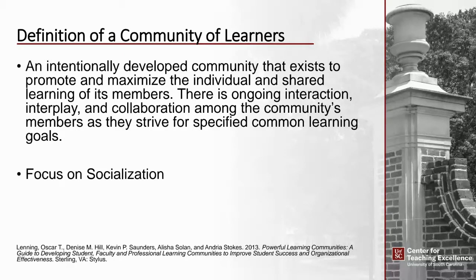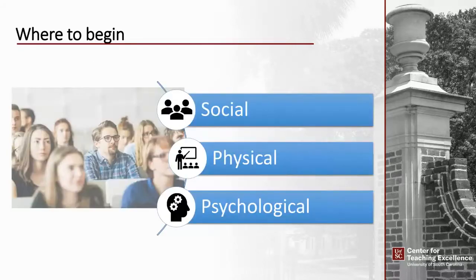Now that you have formulated your own ideas and heard the definition of a community of learners, where do you begin? Building that community of learners in your classroom is intentional and requires you to plan your strategy in advance. Whether your class is face-to-face, online, blended, or hybrid, students want to connect with you and their fellow classmates. We'll focus on three strategic areas: social, physical, and psychological.